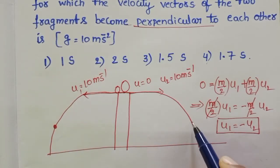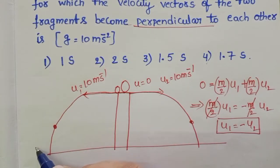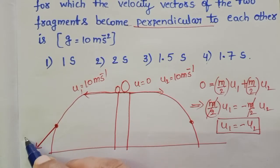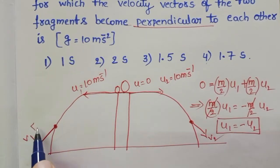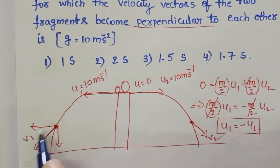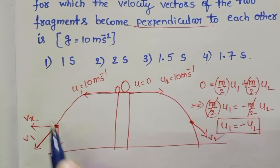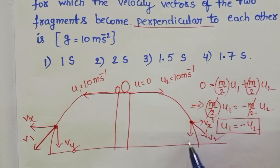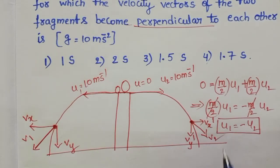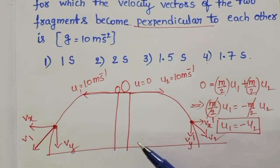Let us take two points. The instantaneous velocity of the first fragment at that point is V1, and the second fragment's is V2. The components of velocity are: horizontal velocity Vx, vertical velocity Vy for the first; and Vx′, Vy′ for the second. There is no external force along the horizontal direction, so horizontal velocity remains constant. Gravitational force acts along the y-direction, so vertical velocity changes due to acceleration due to gravity.